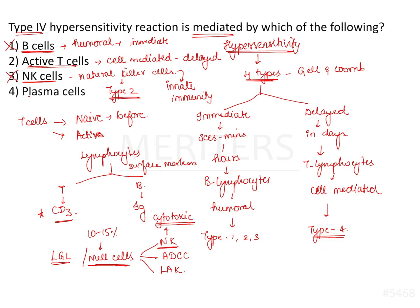Option 4 says plasma cells. B cells after antigenic exposure form plasma cells, which are cloned to produce specific types of immunoglobulins. Therefore plasma cells are concerned with the production of antibodies in the form of immunoglobulins, and plasma cells are a form of B lymphocytes. So options 1 and 4 are related to one another — both are components of humoral immunity involved in immediate type of hypersensitivity, either type 1, 2, or 3.